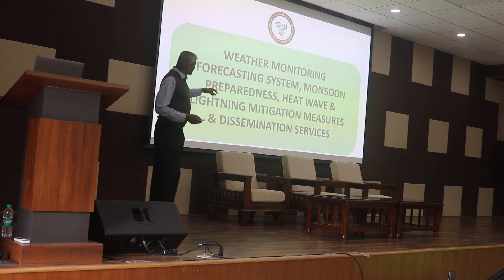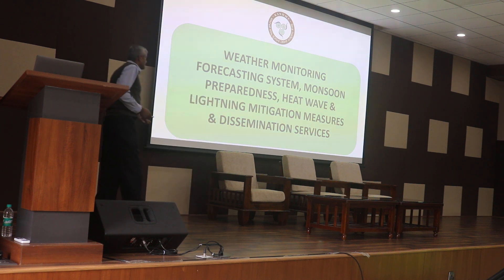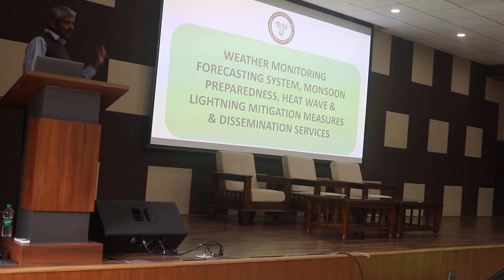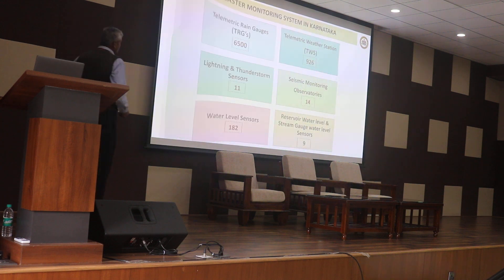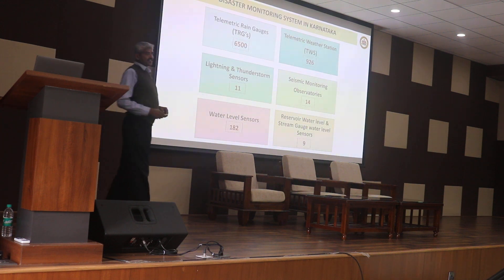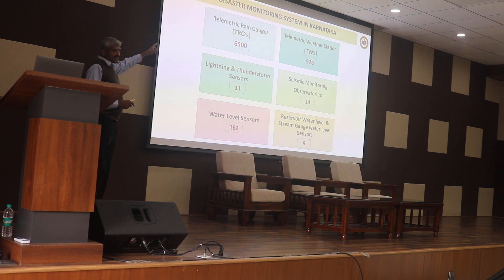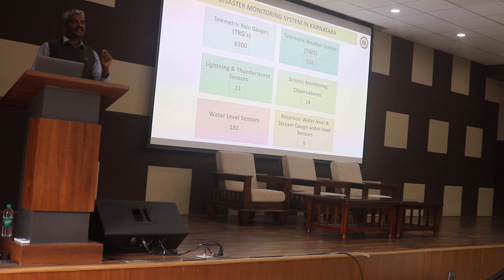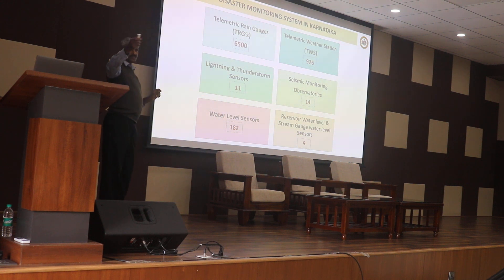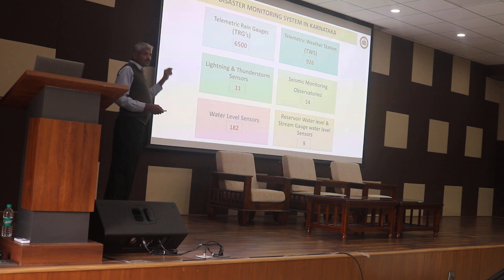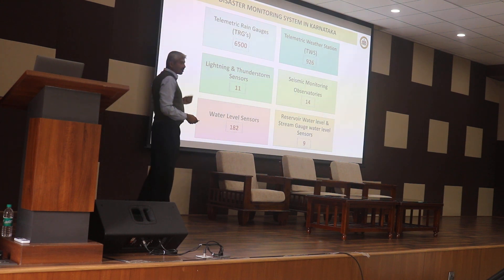Lightning mitigation measures and disaster dissemination services should be strengthened for disaster management and monitoring. The state has installed 6,500 telemetric rain gauge (TRG) stations, telemetric weather mapping sensors at hobli level, lightning and thunderstorm sensors, specific monitoring stations, water level sensors, reservoir level gauges, and stream gauges. This sensor network has been established across the state.